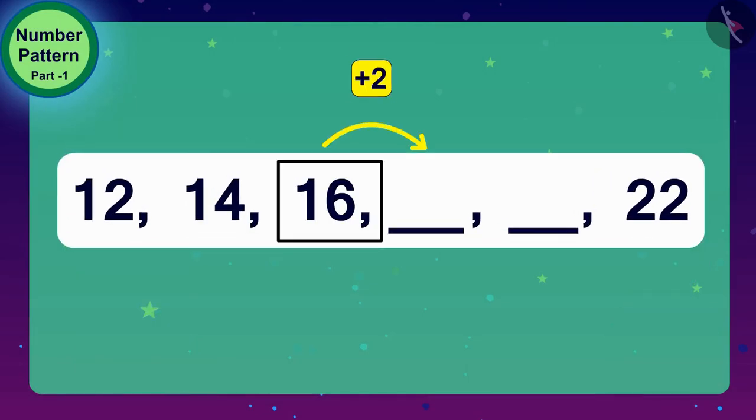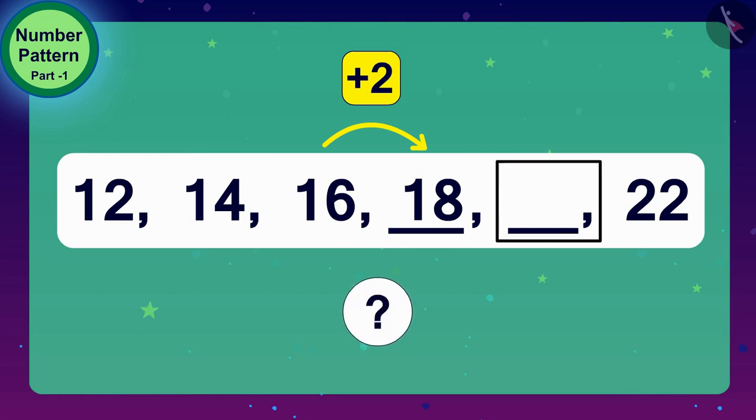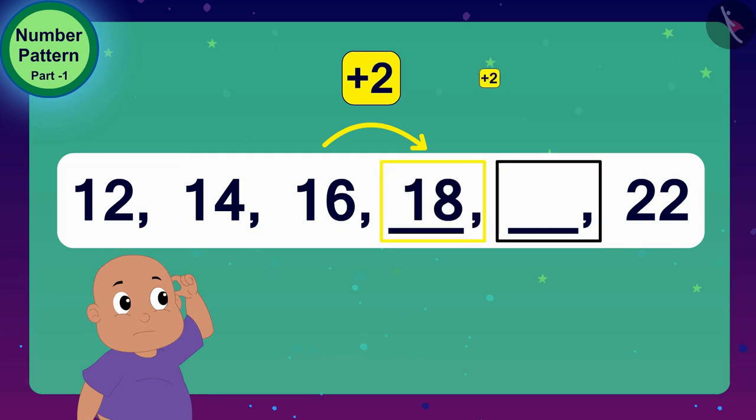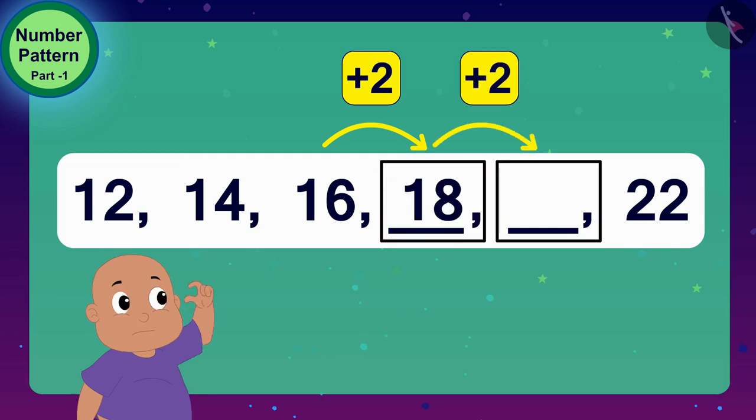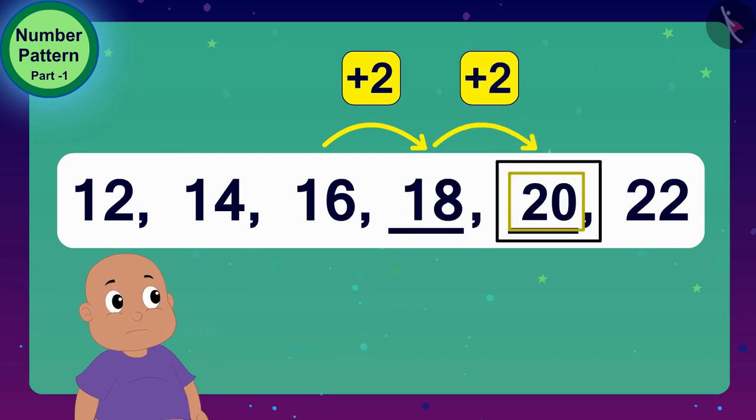We have to add 2 to 16. Then, 2 added to 16 is 18. Bablu, now can you tell what will be the next number? Hmm, add 2 to 18 and you get 20. Raju, we have solved the first riddle.